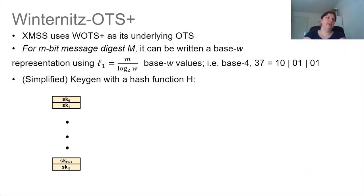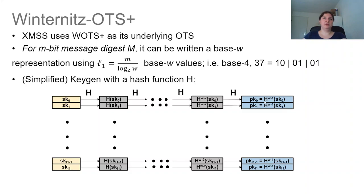And then a simplified view on the key generation of Winternitz one-time signature scheme is that we have a hash function H. We generate a secret key for each of these base W chunks that can be in the m-bit message digest. And we simply apply the hash function to each of these secret keys. And we do not do that once, we repeat that. And we repeat that specifically W minus one times to get the public key of the Winternitz one-time signature.